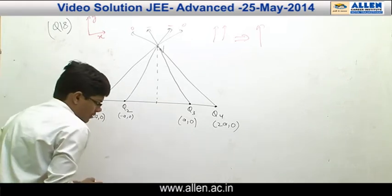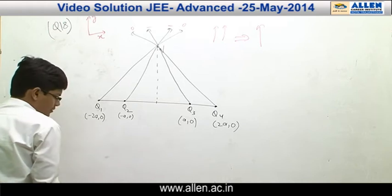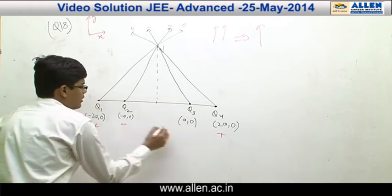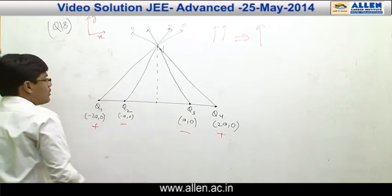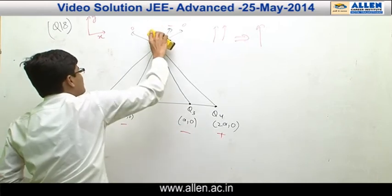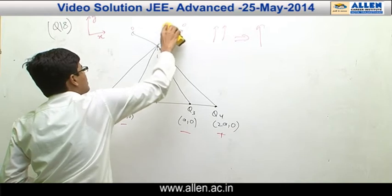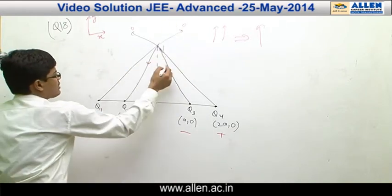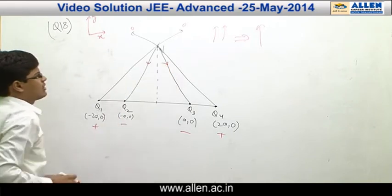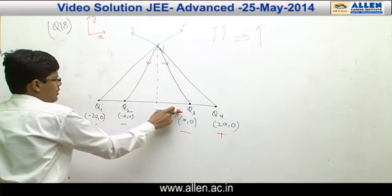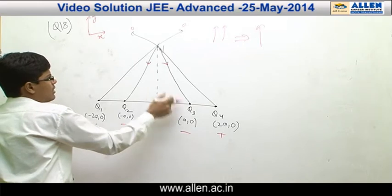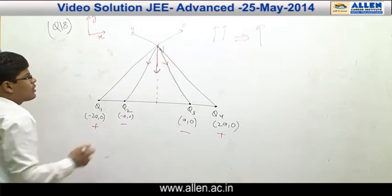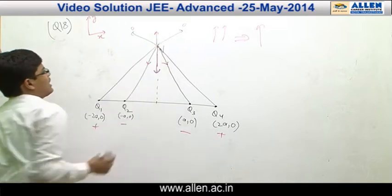In R, we are given Q1 as positive, Q4 as positive and Q2 and Q3 negative. So now these two vectors will be in opposite directions. This vector will be along this direction and this vector will be along this direction. The component of net resultant of Q2 and Q3 will be along this direction and by Q1 and Q4 will be along this direction.